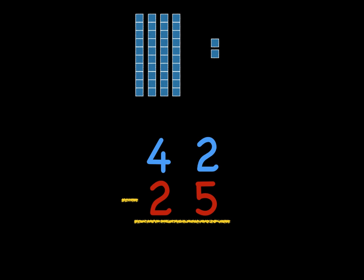So that's the number 42 drawn with the blue squares and we're ready to subtract or take away 25. Now the first thing we want to do is subtract our ones,